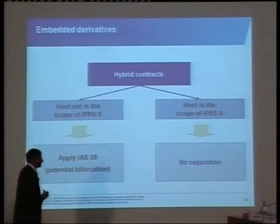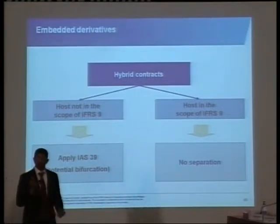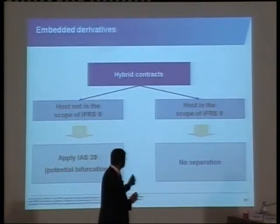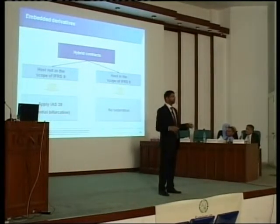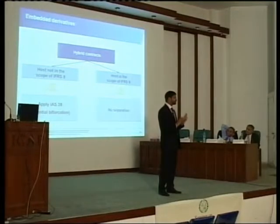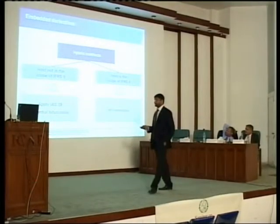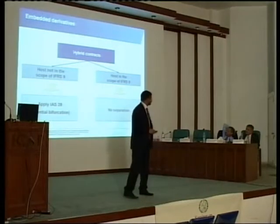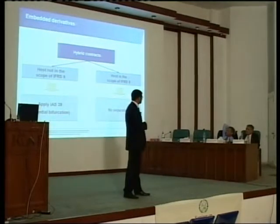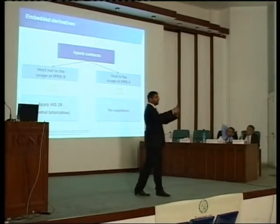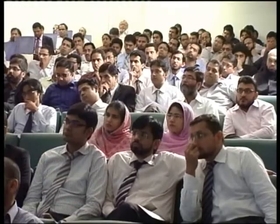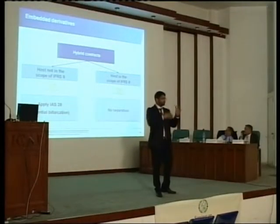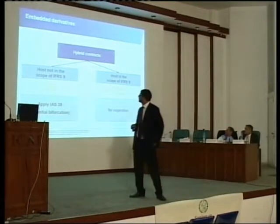There's also a small change on embedded derivatives in IFRS 9. If you have a financial asset in the scope of IFRS 9 and it has an embedded derivative, don't separate it — measure the whole thing at fair value through profit or loss. However, if you have a lease with an embedded derivative, you still have to separate. And before, where you would treat the loan at amortized cost and the embedded derivative at fair value through profit or loss — that's gone. You have to treat the whole loan at fair value through profit or loss.